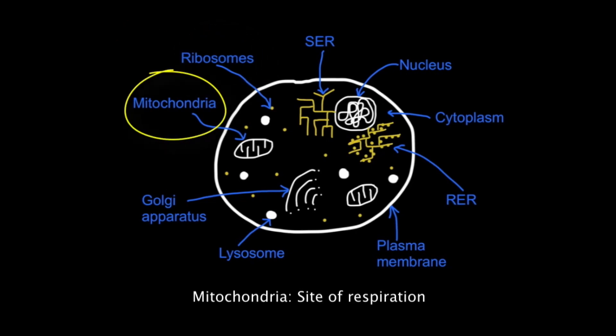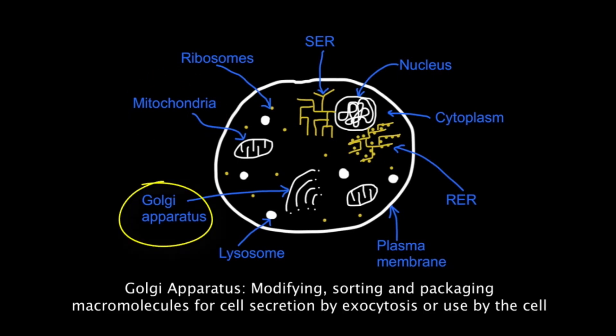Mitochondria are the site of respiration. The Golgi apparatus modifies, sorts, and packages macromolecules for cell secretion or internal use. Cell secretion of these macromolecules occurs by exocytosis.